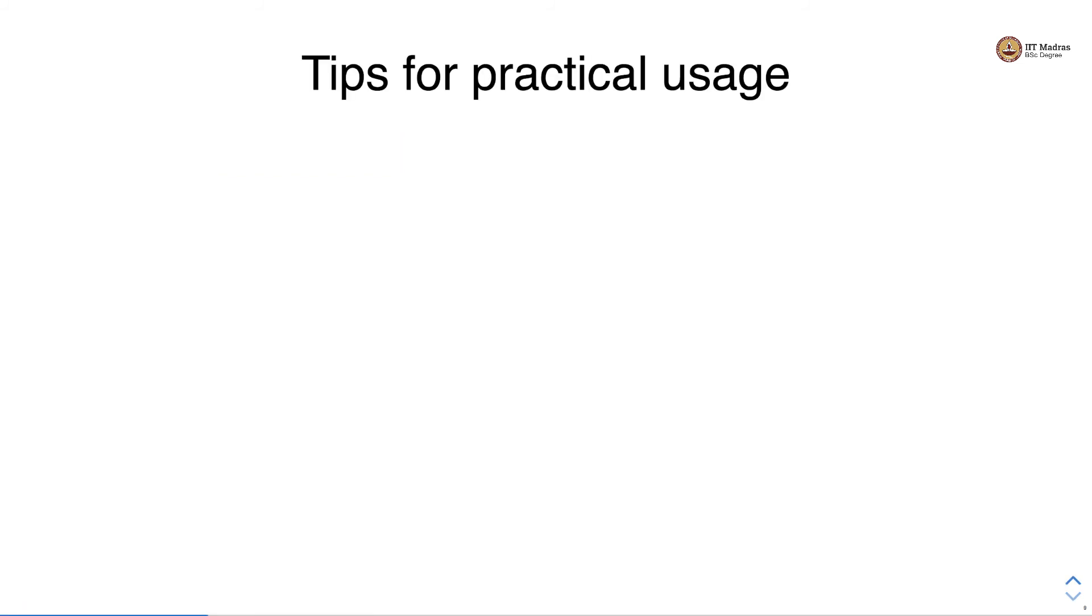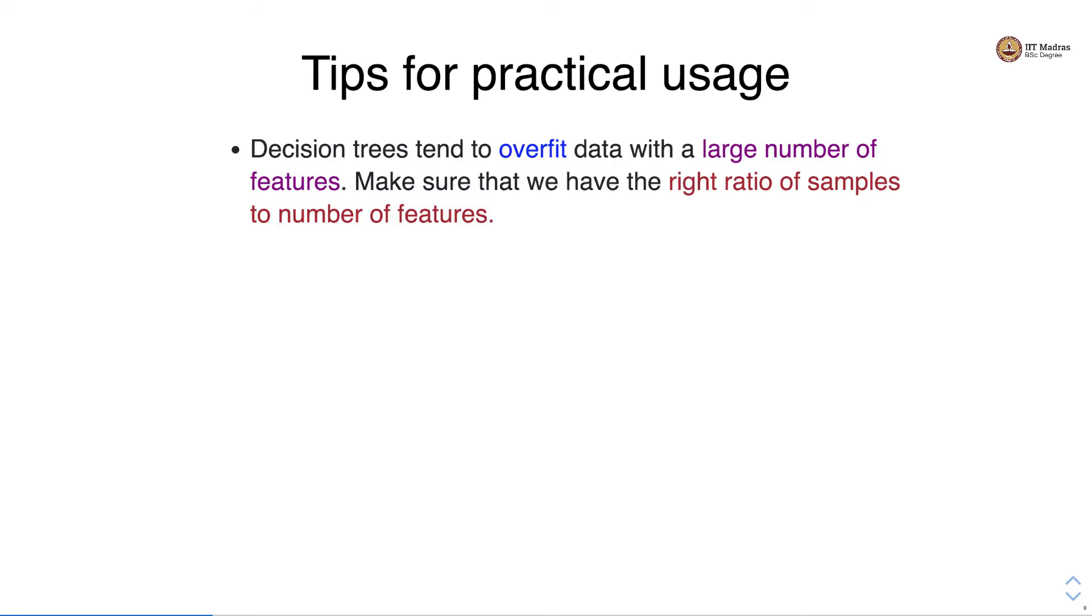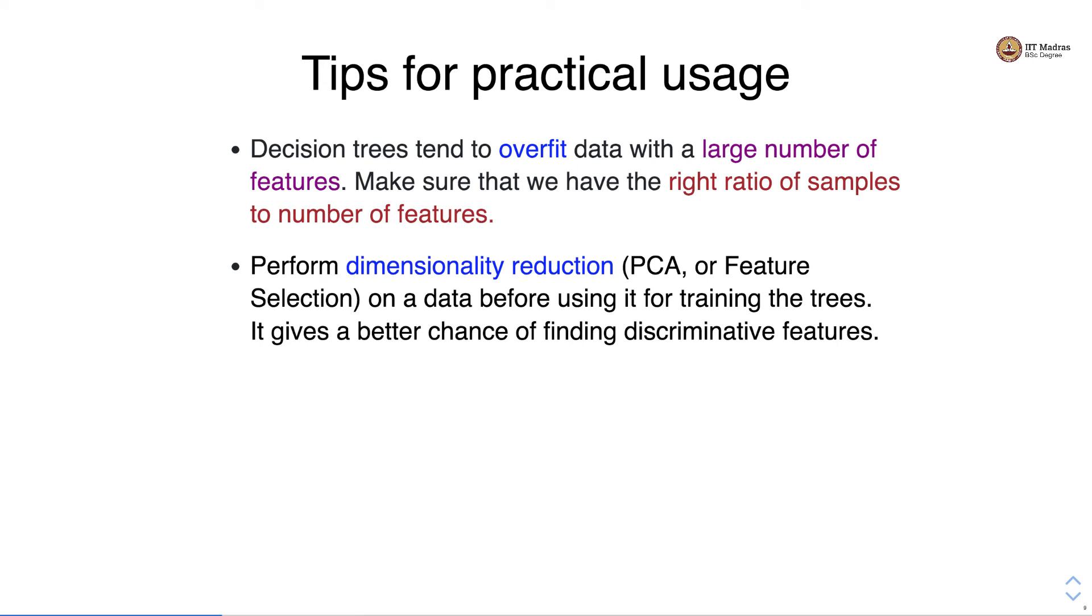Let's look at some tips for practical usage. Decision trees tend to overfit data with a large number of features. Make sure that we have the right ratio of samples to the number of features. It's a good idea to perform dimensionality reduction using techniques like PCA or feature selection. The dimensionality reduction on the data before using it for training the trees gives a better chance of finding discriminative features.